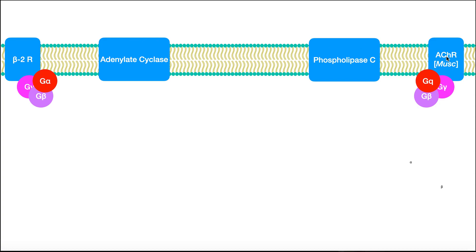Over here we have the acetylcholine receptor. This one specifically is a muscarinic receptor, not nicotinic. Both of these receptors are what we call G-protein coupled receptors, meaning on their cytoplasmic side, as you see right here, they're coupled to G-proteins.